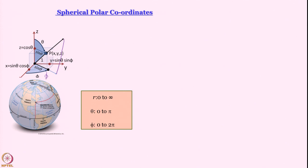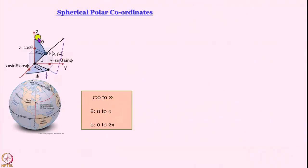The range of r is from 0 to infinity — r cannot go from minus infinity to plus infinity. θ goes from 0 to π (180 degrees). You might ask why not 360 degrees: it is because we allow φ to go from 0 to 2π, so there is no need for θ to exceed 180 degrees. One could think of θ ranging from 0 to 2π and φ from 0 to π, but the existing convention — θ from 0 to π, φ from 0 to 2π — is what we follow.